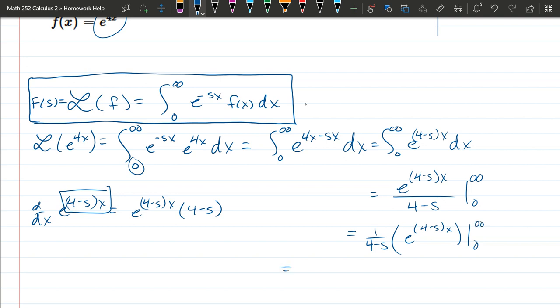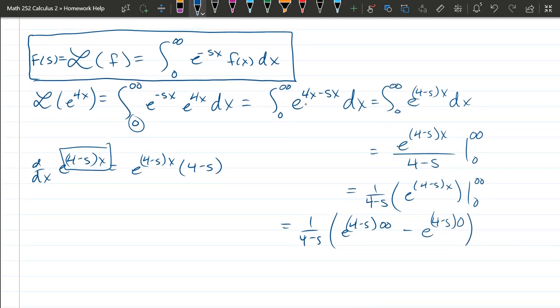Now we're ready to plug in. So we have e to the (4 minus s) of infinity minus e to the (4 minus s) to the 0 power. So this e to the (4 minus s) to the 0, that's e to the 0. Now up here, this is way more tricky.